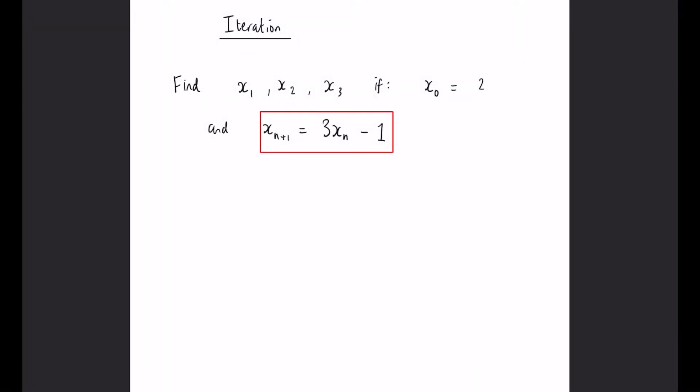In this video we will be looking at iteration. Iteration is basically a process used to produce a sequence of numbers. Now if you have a look at this first example, the way we do it is we get given an equation, so x_{n+1} equals 3x_n minus 1. We get given a starting value of x_0 equals 2 and they've asked us to produce x_1, x_2 and x_3.